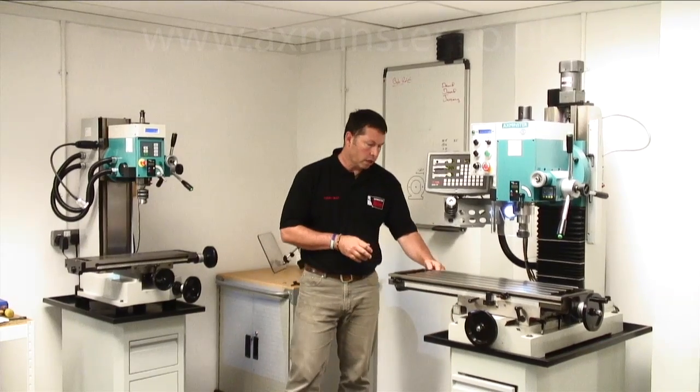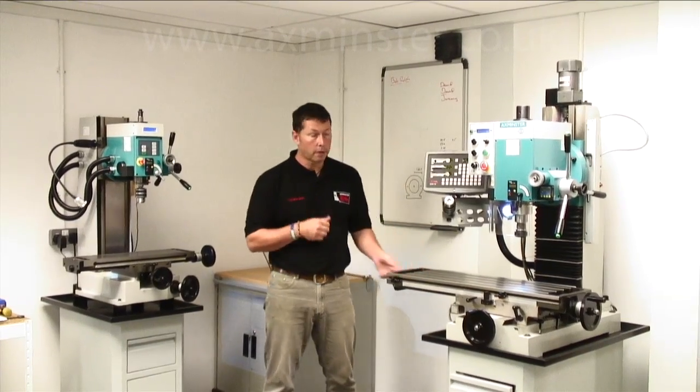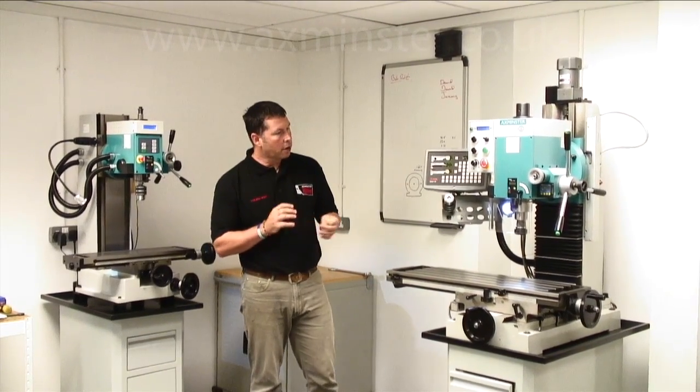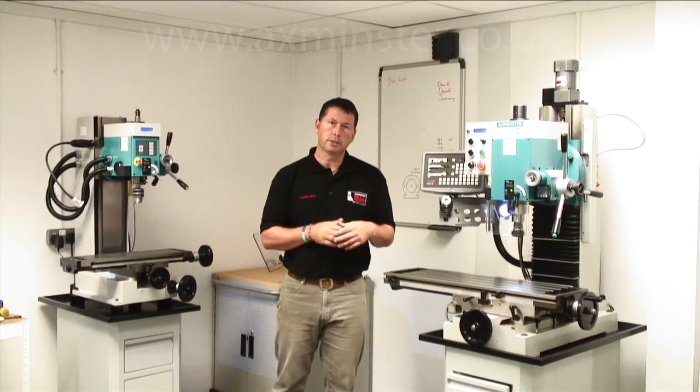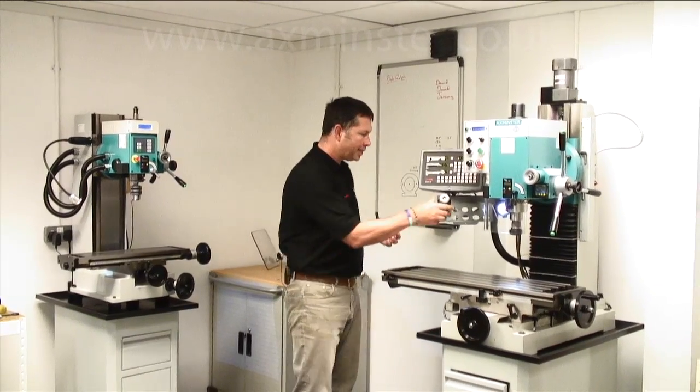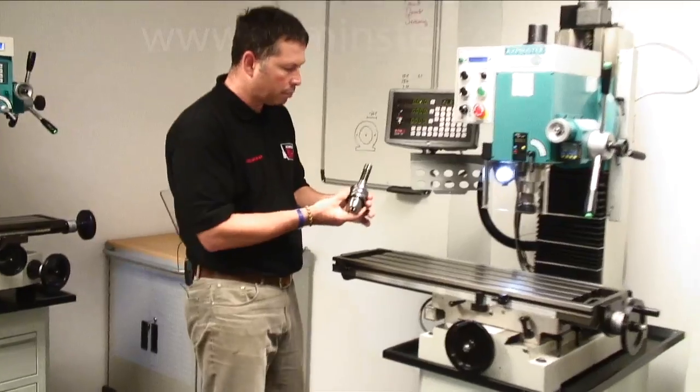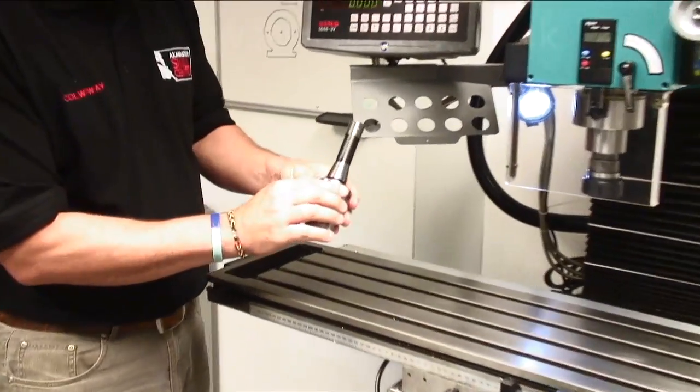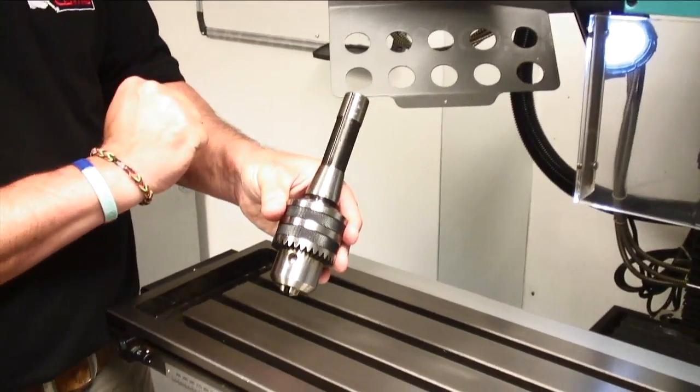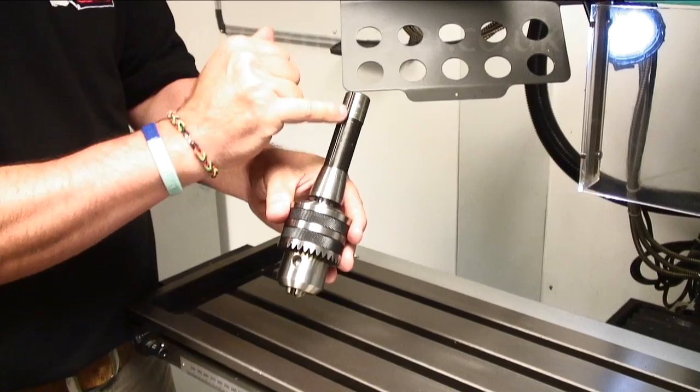The bed has drain holes here for your cutting fluid. And another slight difference that we've made since the SX3 is the Morse tapers. We've gone away from the three Morse taper that we had on the smaller machine and we've now gone to an R8 taper here with its own center spine.